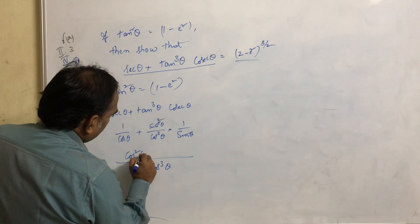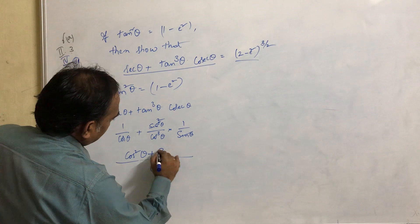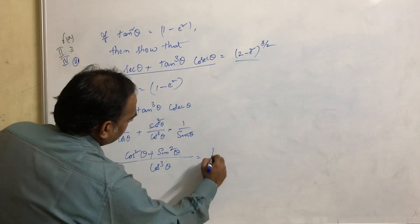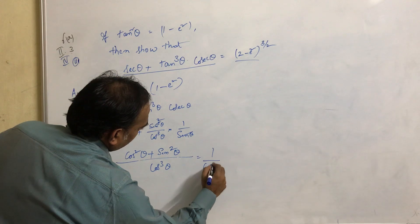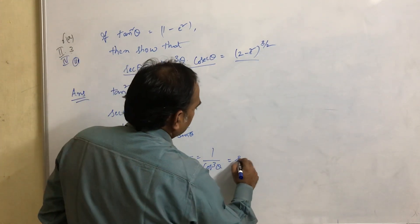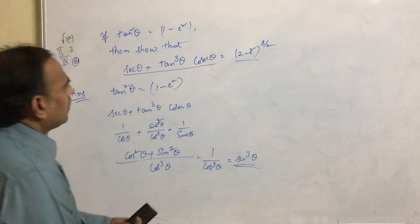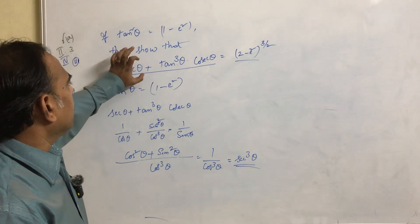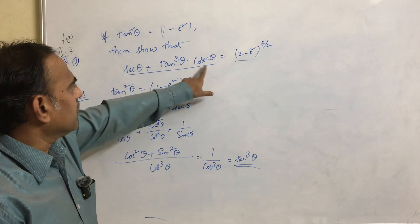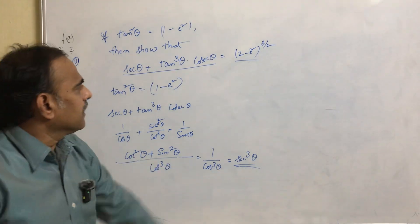We divide cos cubed theta by cos theta — the remaining factor is cos squared theta. Multiplying cos squared theta gives cos squared theta plus sin squared theta in the numerator, all over cos cubed theta. That simplifies to 1 by cos cubed theta, which is secant cubed theta. So secant theta plus tan cubed theta into cosecant theta equals secant cubed theta.